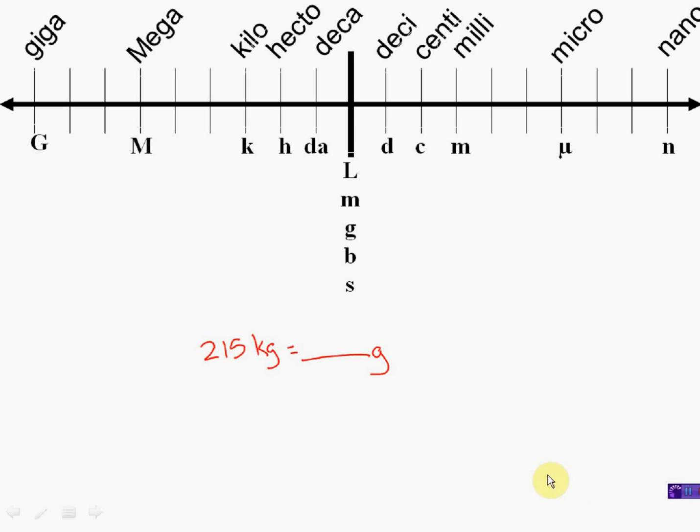Here's another very similar problem. I have 215 kilograms and I want to find out how many grams that is. So once again, the same process we're going to use. Identify where we are in the number line. We're starting off in kilo. So I'm right here. And I need to move to grams. Grams is right here. And so I'll be moving one, two, three.